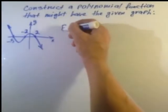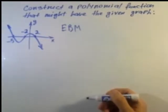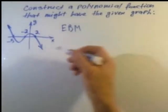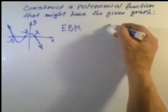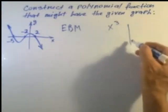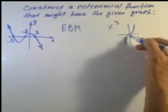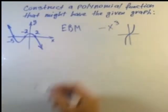End behavior model means how the graph behaves when x values get really large. The closest graph from the library of functions that looks like this is x cubed. It just looks like that. But because it's flipped over the x-axis compared to our graph, we're going to have it with a minus sign.